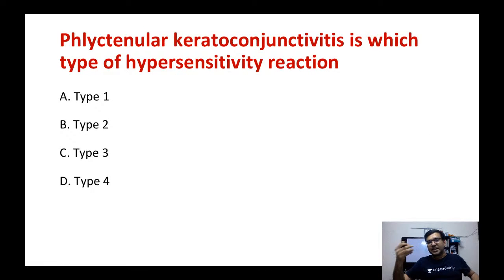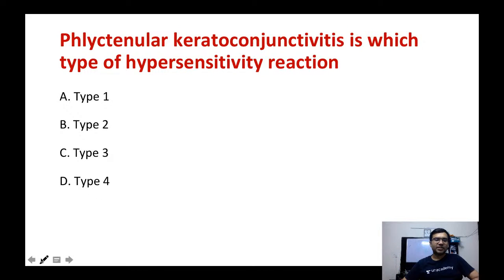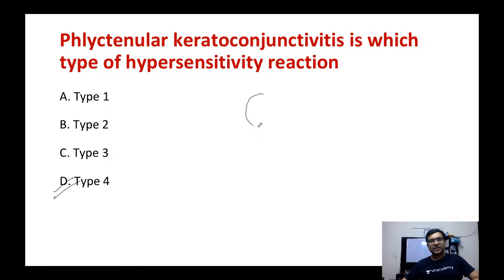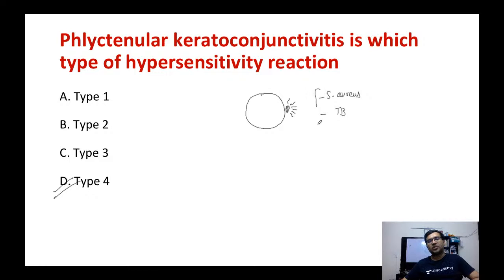Next question: phlyctenular keratoconjunctivitis is a type of which hypersensitivity reaction — type 1, 2, 3, or 4? It is a type 4 hypersensitivity reaction — a delayed-type reaction. In phlyctenular keratoconjunctivitis, a phlycten is seen: a nodule near the limbus surrounded by blood vessels. The most common causes are Staphylococcus aureus and tuberculosis.